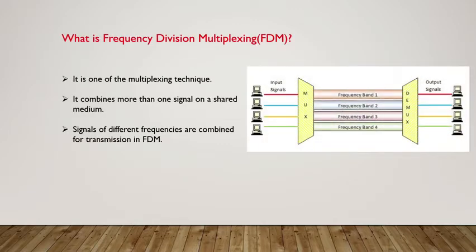First of all, what is FDM — that is Frequency Division Multiplexing. It is one of the multiplexing techniques. It combines more than one signal on a shared medium. As you can see in the figure, signals of different frequencies are combined for transmission in FDM. There are many input signals which are passed through a multiplexer and they share one frequency medium between them.